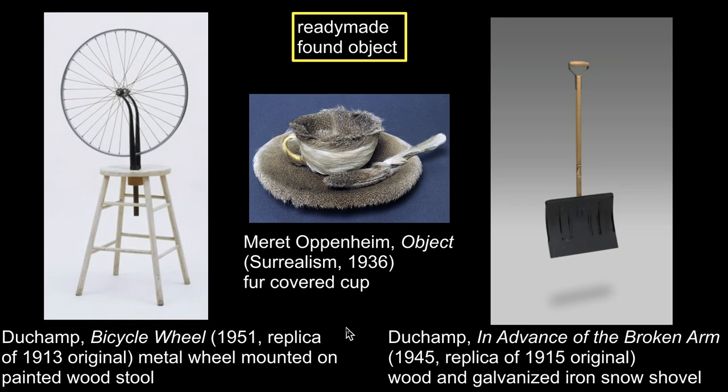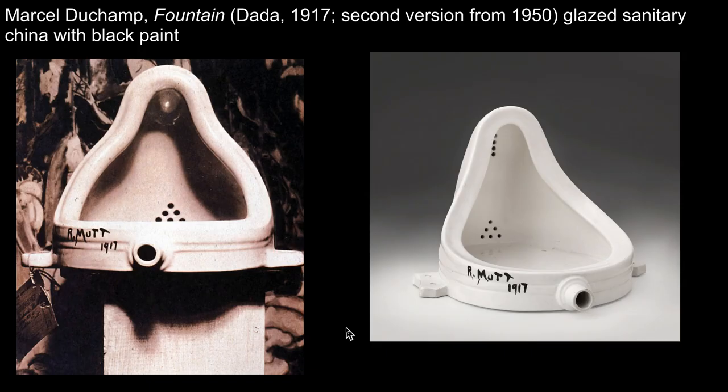His 1917 Fountain is a ready-made: a urinal moved from the porcelain manufacturer, not to a men's restroom, but to an exhibition. He gave it a new context and transformed it into art. He did not alter it except to change its orientation and inscribe it with a fake artist's name and date. He did this to push the envelope on the American art establishment, to prompt questions about the definition of art, and to ruffle feathers — succeeding in doing just that.